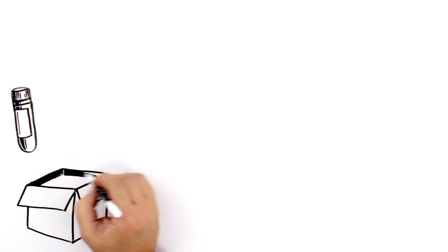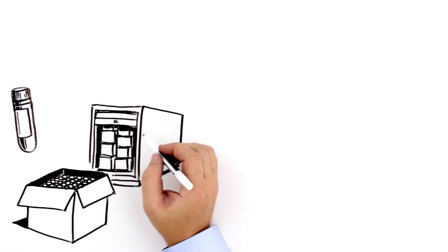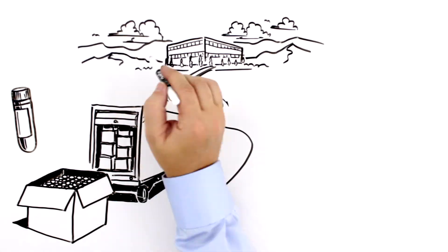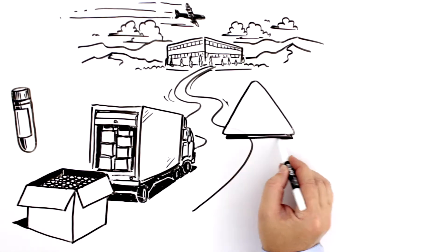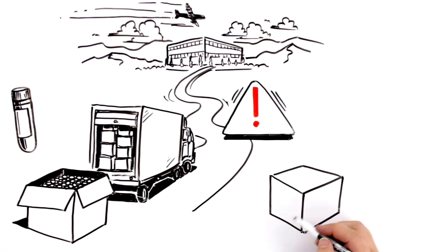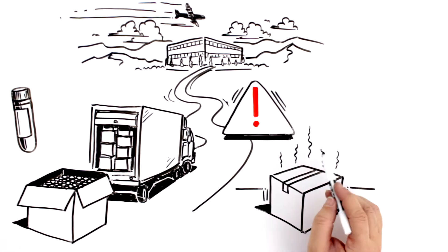But defective cold chain logistics can compromise the impact of these vaccines. If temperature thresholds are breached, for example, the vaccines can become inactive and stop providing the required protection.